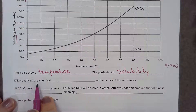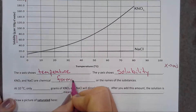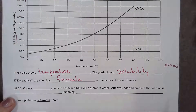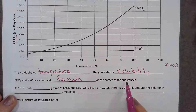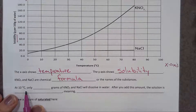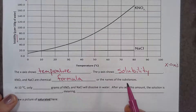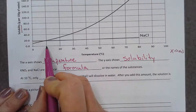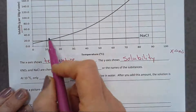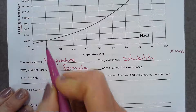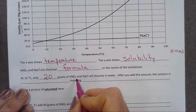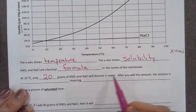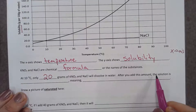KNO3 and NaCl are chemical formulas — we mentioned the word formula before when we were doing atomic structure. These are the names of the substances. At 10 degrees Celsius, I go to my temperature, go up to where KNO3 meets, and it is 20. So only 20 grams of KNO3 — and NaCl, because they're the same at that point — will dissolve in water. After you add this amount, the solution is saturated.